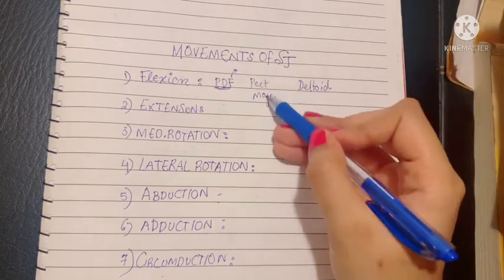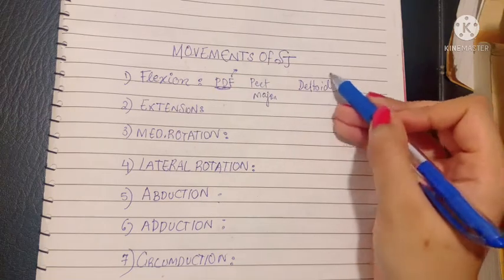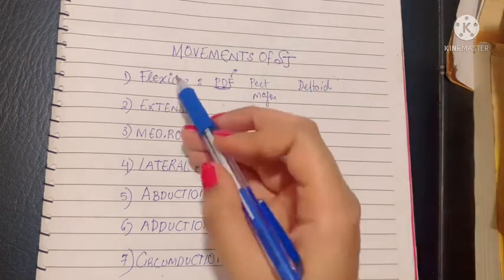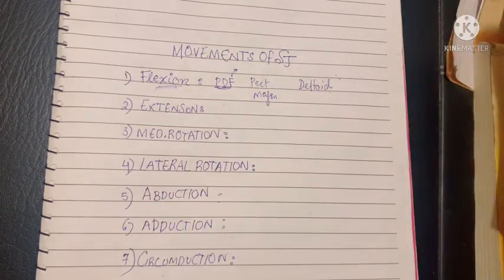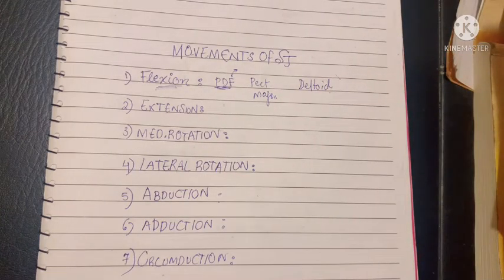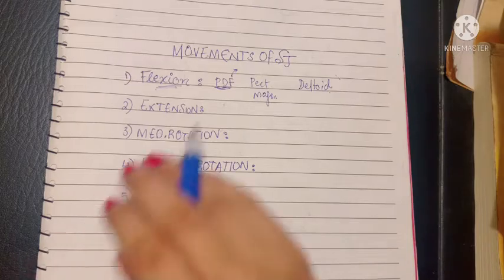More specifically, the clavicular head of the pectoralis major and the anterior fibers of the deltoid carry out flexion. Other accessory muscles like the coracobrachialis also perform flexion at the shoulder joint.